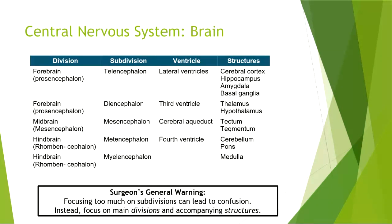Now let's look at the brain. The textbook makes a division: prosencephalon, mesencephalon, rhombencephalon — forebrain, midbrain, hindbrain. Within those you can make further subdivisions: telencephalon, diencephalon, mesencephalon, and myelencephalon. I don't expect you to know all those names. What I'd rather have you do is focus on the three main divisions — forebrain, midbrain, and hindbrain — and have a rough idea of the important structures that make up those divisions. Let's focus on those main divisions and the accompanying structures.